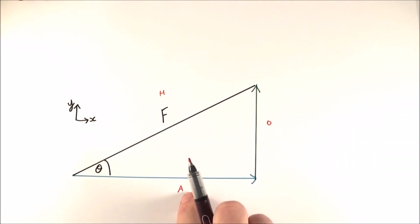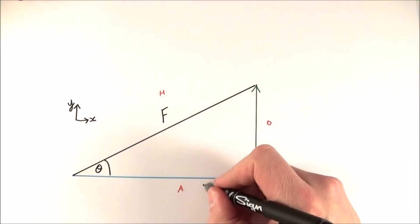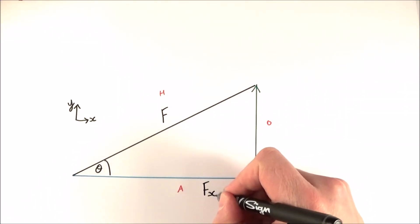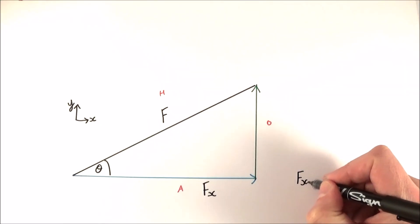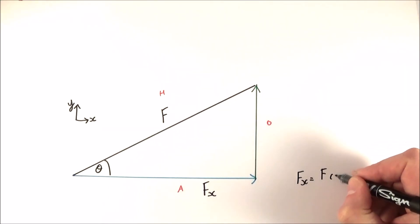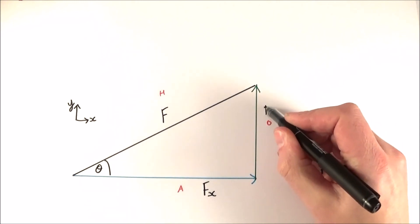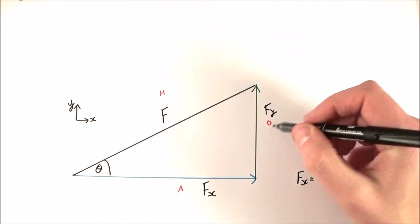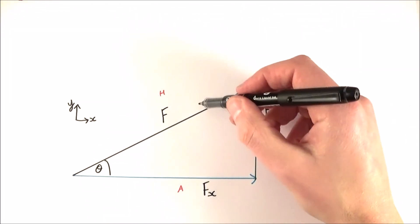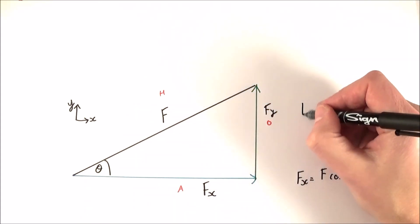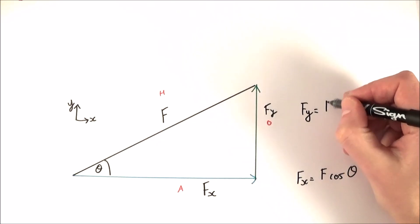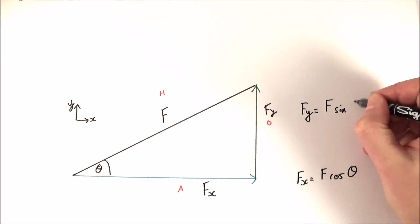If I want to find the size of this force acting in this direction, we can say that because we're using the adjacent side and the hypotenuse, we're going to use cos. We can say that this force in the x-direction, Fx, is going to be equal to the force times cos theta. The force in the y-plane, Fy, because we're using the opposite side and the hypotenuse in this angle here, theta, Fy is going to be equal to F sin theta.